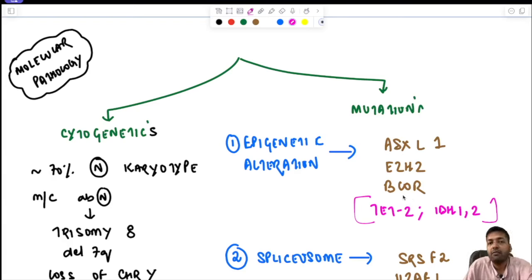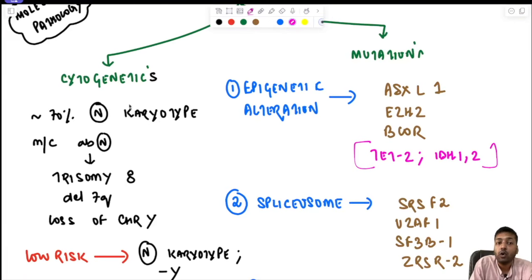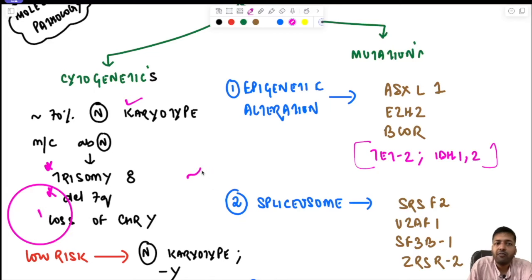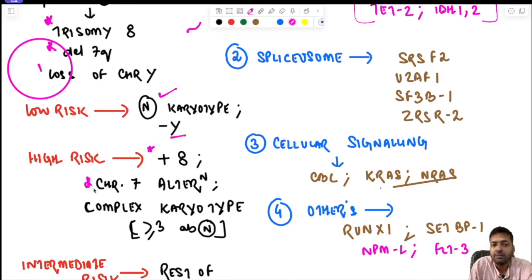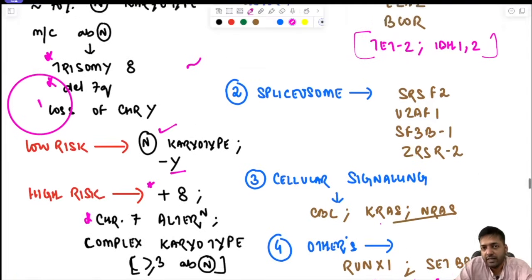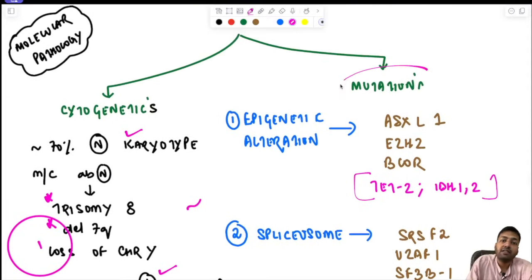Regarding molecular pathology, 70% of CMML has a normal karyotype. The most common cytogenetic abnormalities are trisomy 8, deletion 7q, and loss of chromosome Y. Risk stratification: normal karyotype or loss of Y is low risk; trisomy 8, chromosome 7 alterations, or complex karyotype (≥3 abnormalities) is high risk; any other cytogenetic abnormality is intermediate risk.